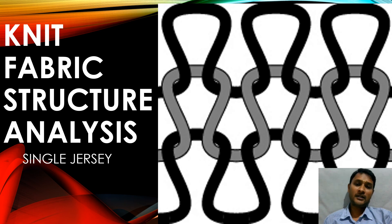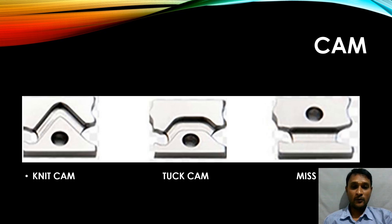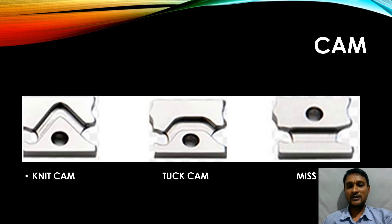Since for knit fabric structure analysis we need to have fundamental knowledge, I have started the video series with single jersey structure. We might have seen many knit structures in our day-to-day life, but all those structures were made using only these three cams: knit cam, tuck cam, and miss cam. Just by playing with these three cams, all the knit structures were being made.